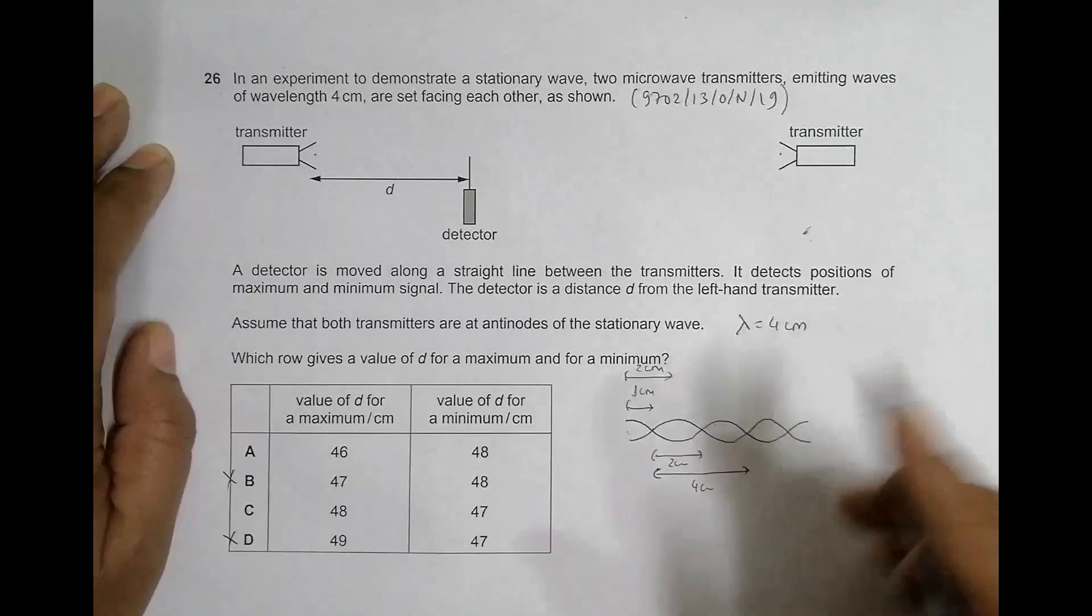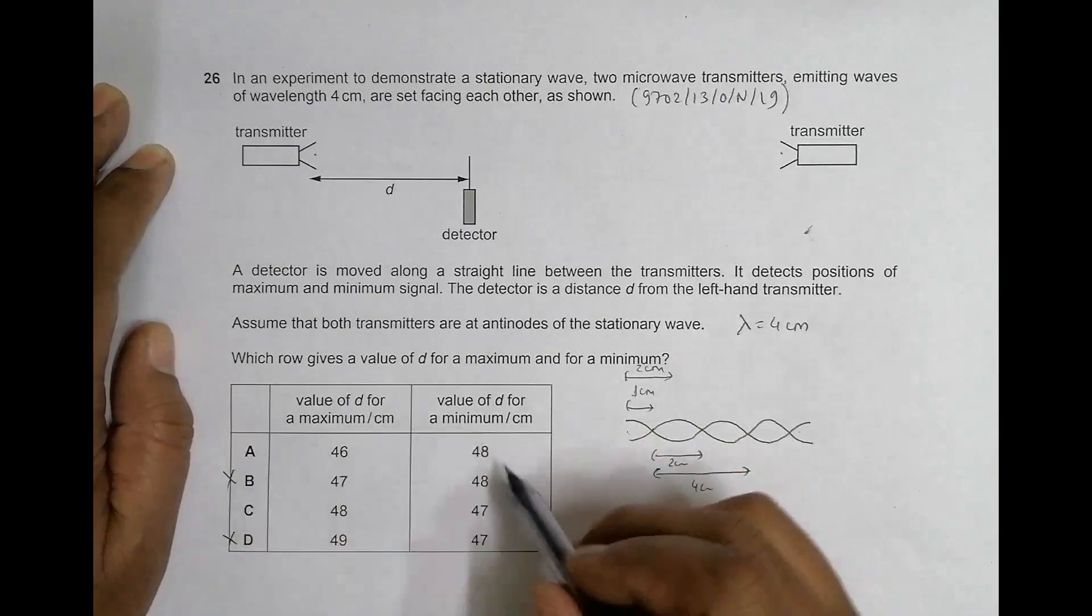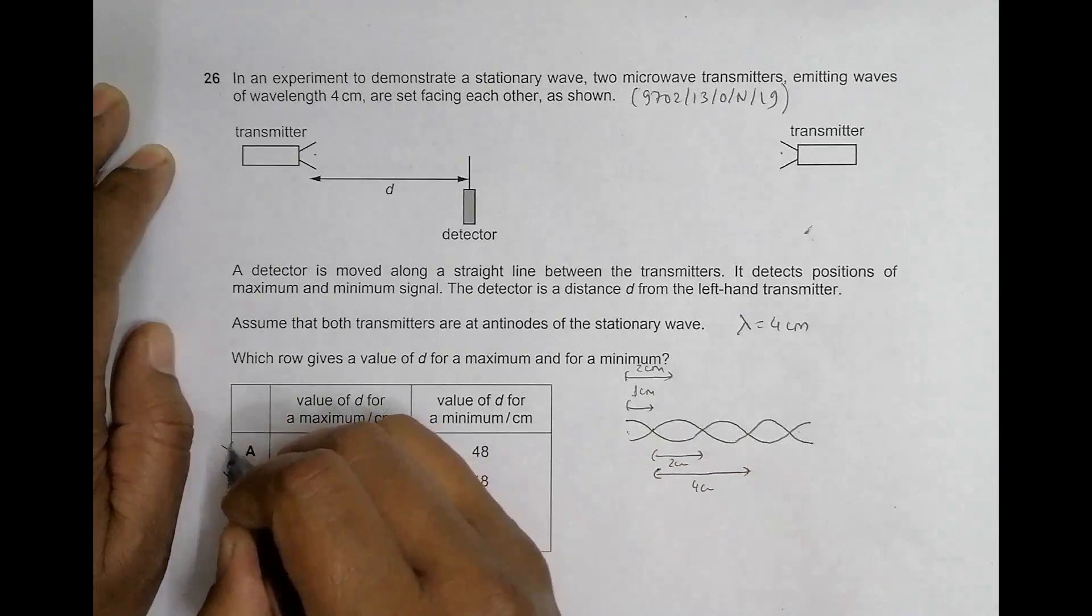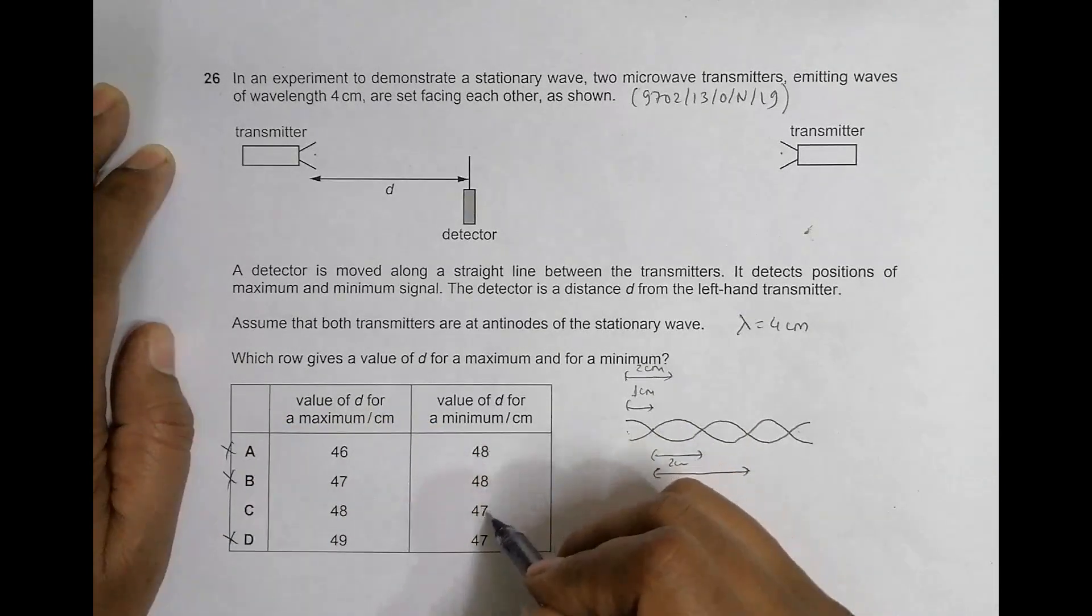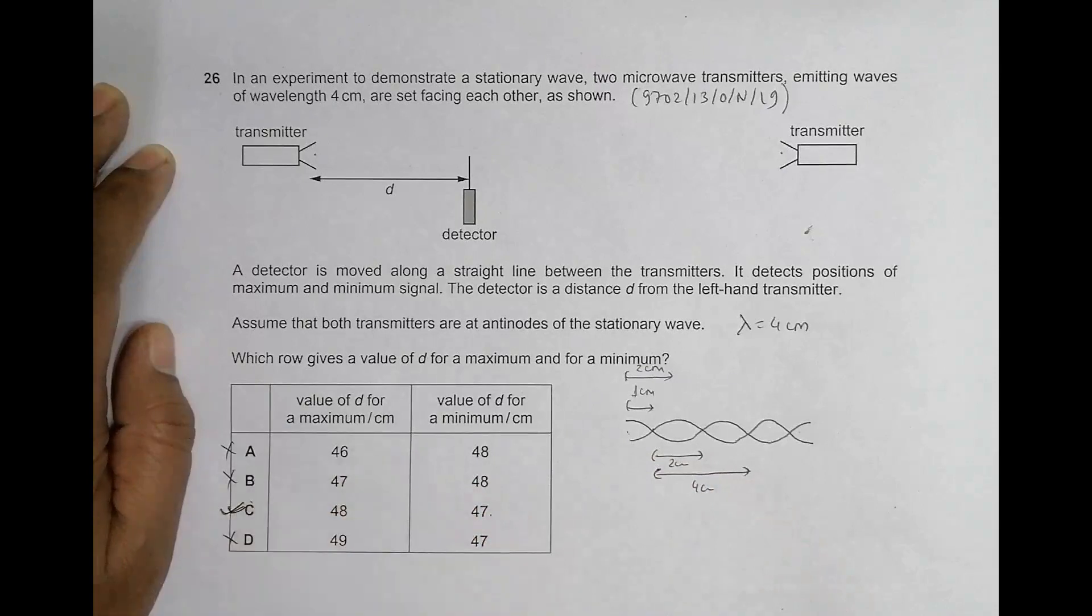So here if I go through the choices, the only options remaining are A and C. So in A there is even, so it is again incorrect. Odd centimeters is in choice number C, so that's why choice number C is the correct choice.